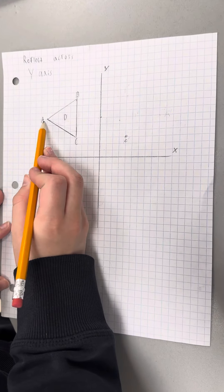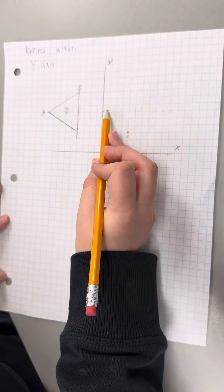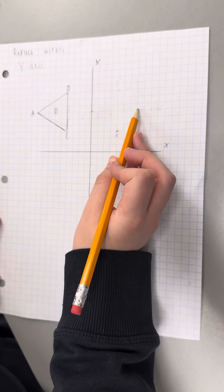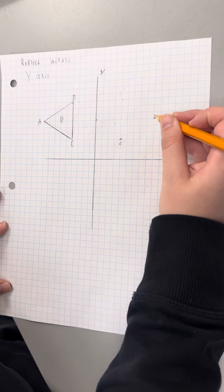Let's do it with all the other points, which is point A. So one, two, three, four, five, six, seven, eight, nine. So one, two, three, four, five, six, seven, eight, nine. So we would label this point A.